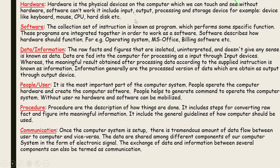We have different types of hardware: input hardware, output hardware, processing hardware, and storage hardware. Input hardware includes keyboard, mouse, scanner, microphone, camera, and web camera. Output hardware includes monitor, printer, and plotter. Processing hardware includes the CPU. Storage hardware includes main memory and secondary memory.